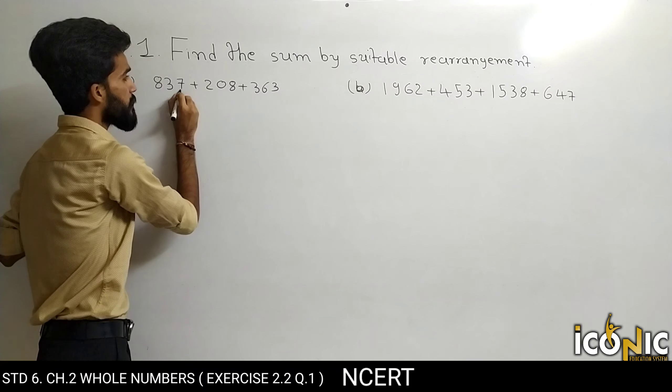Addition karte hain: 8 plus 2 is 10, toh yahan 0 aaya aur 1 carry. 3 plus 6 is 9 aur ek 1, yani 10. 5 plus 9 is 14 aur ek 1, yani 15. 1 plus 1 is 2 aur ek 1, yani 3 — toh pehla part 3500. Plus: 3 plus 7 is 10, 0; 4 plus 5 is 9 aur ek 1, yani 10; 6 plus 4 is 10 aur ek 1 is 11 — yani 1100.